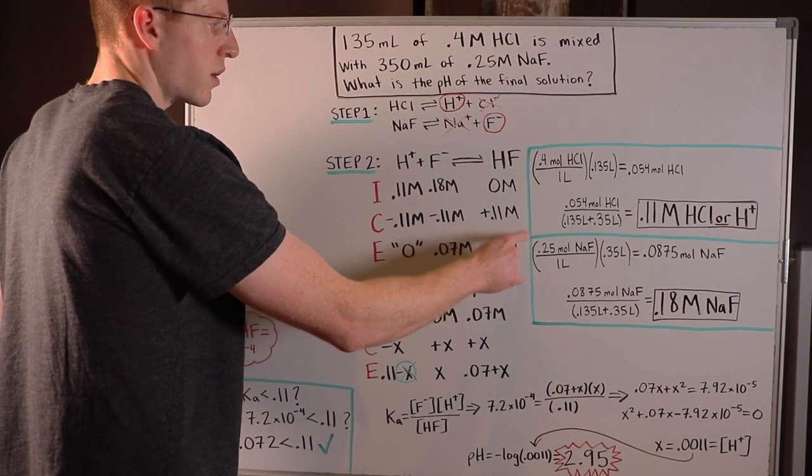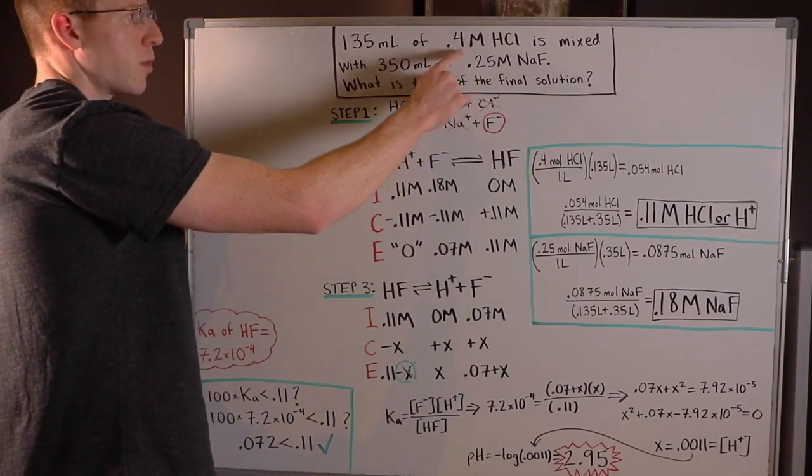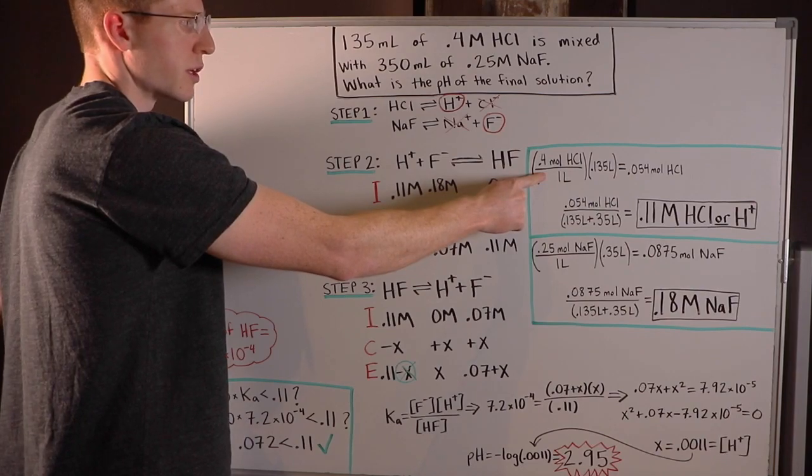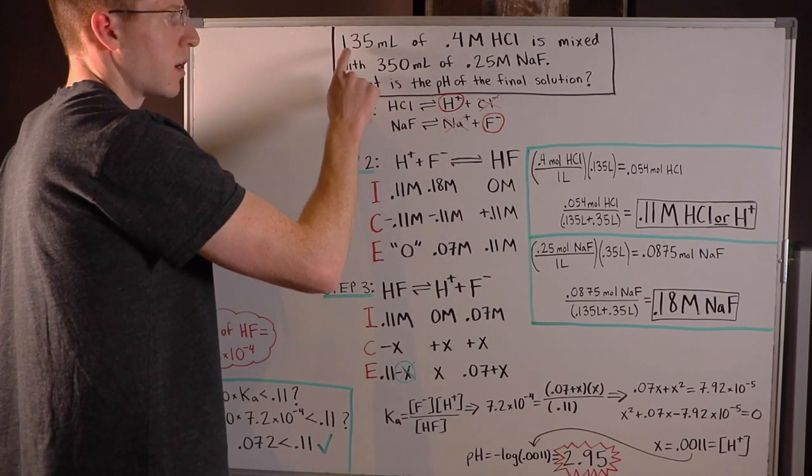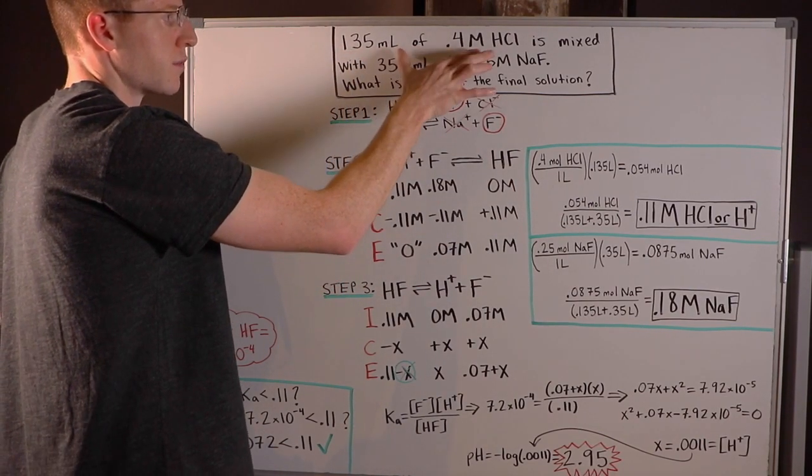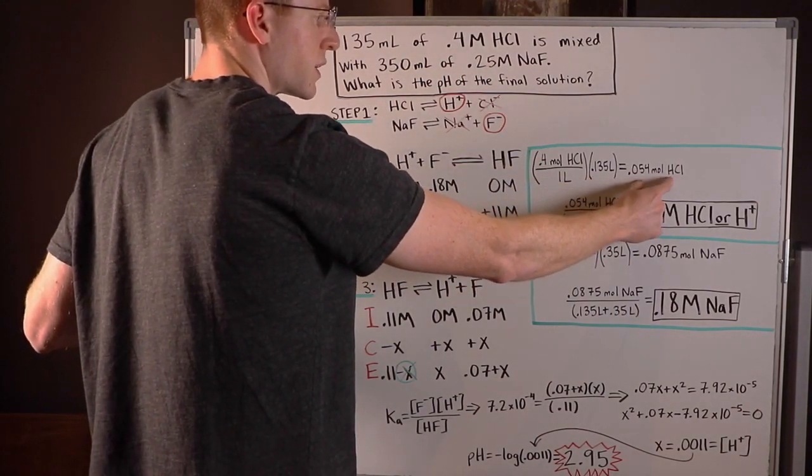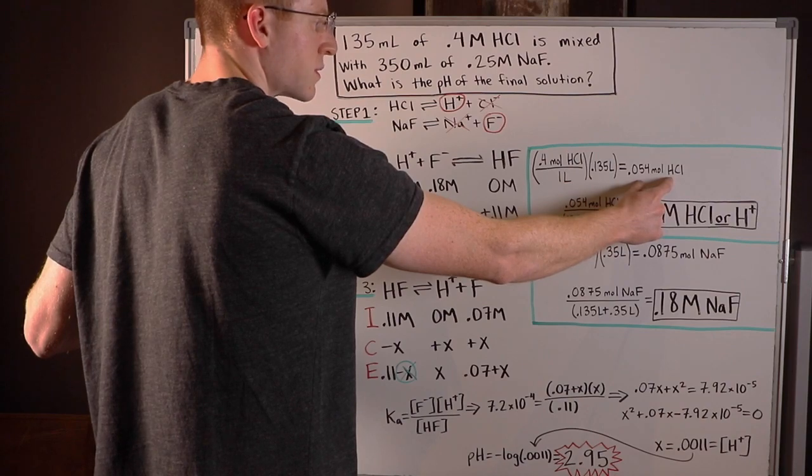So you can see I started out with 0.4 molar HCl, which means I had 0.4 moles of HCl per one liter of solution. But I know I only had 135 milliliters of that HCl solution or 0.135 liters. Thus, I only had 0.054 moles of HCl.